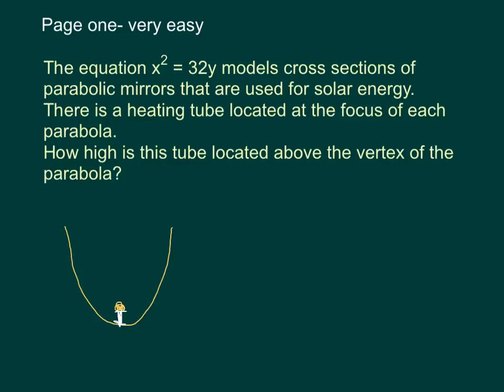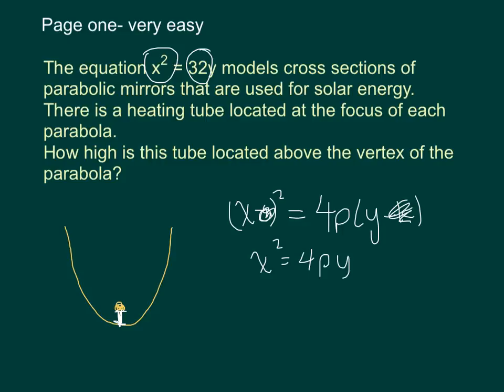Now notice I drew my picture opening up, and I knew to do that because I knew my x was squared, and this coefficient here is positive. So it's important to remember our general form: (x - h)² = 4p(y - k). Obviously my center is going to be at the origin, so these are both 0, h and k. So I'm left with x² = 4py.